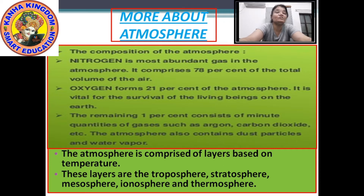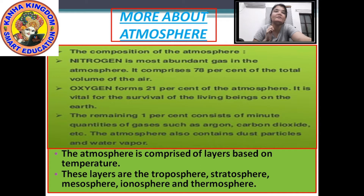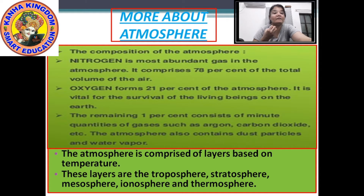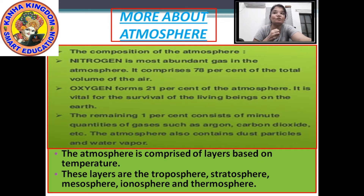Oxygen forms 21% of the atmosphere. It is vital — meaning necessary — for the survival of living beings on Earth. The remaining 1% is a mixture of other gases including argon, carbon dioxide, etc. Other things present in the atmosphere besides gases are dust particles and water vapour.